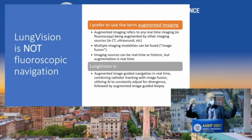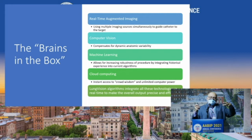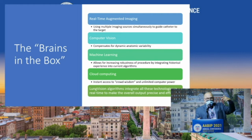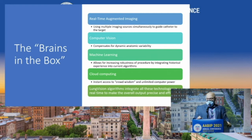Following navigation there's augmented image-guided biopsy. The real-time augmented imaging uses multiple imaging sources simultaneously to guide the catheter to the target. We use computer vision to compensate for dynamic anatomic variability — patients aren't positioned the same as during their CT, lungs are moving with respiration. Machine learning increases robustness by incorporating historical data into better algorithms. Cloud computing uses everyone's information to make the algorithm better over time.